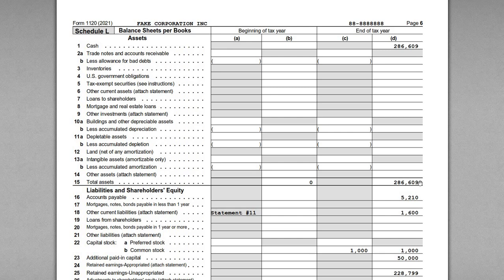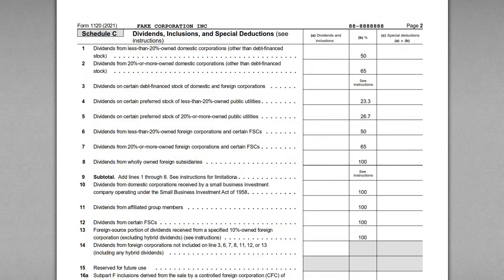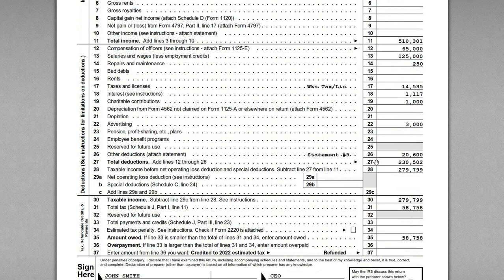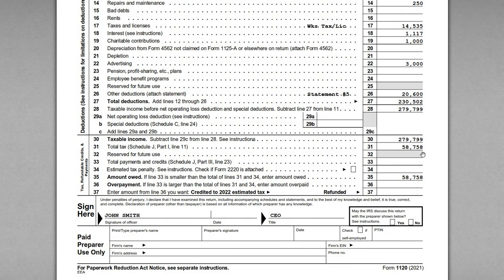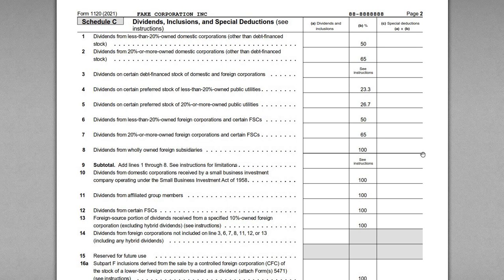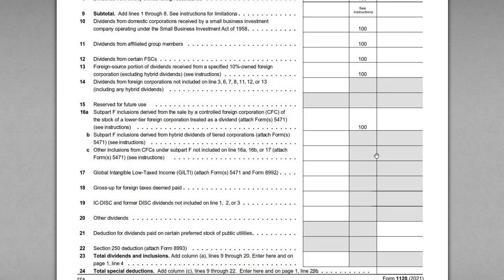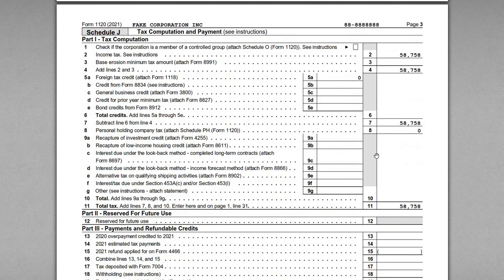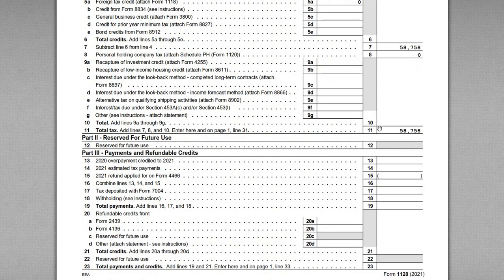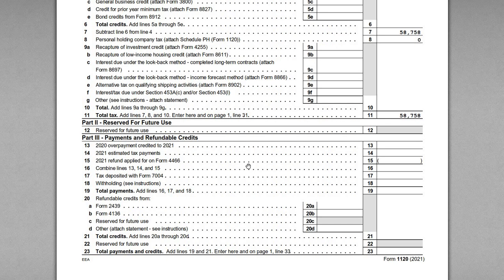That covers the data input for the numbers. Going back to page one, there is the tax computed at 21% of net income. Schedule C — dividends, inclusions, and special deductions — would be filled out if your company received dividend income from another corporation. In our case, Schedule C is blank since we only have interest income and ordinary trade or business income from marketing consulting. Schedule J is where we compute the tax owed. In part two we'd include estimated tax payments, but we didn't make any — we'll pay the full balance with the return filing.